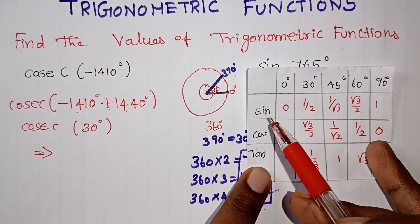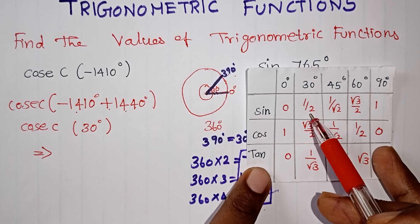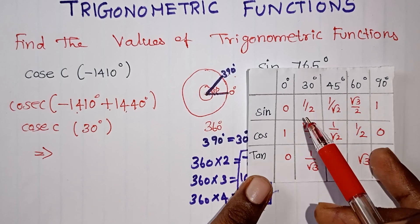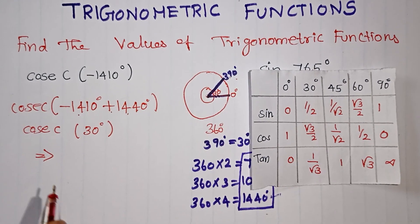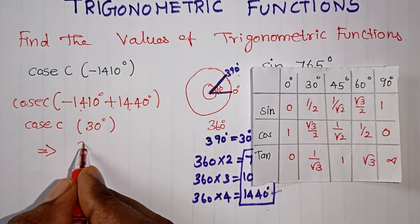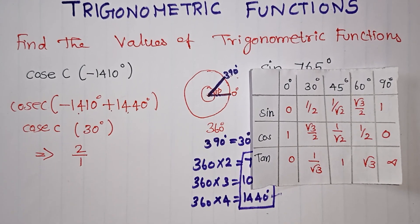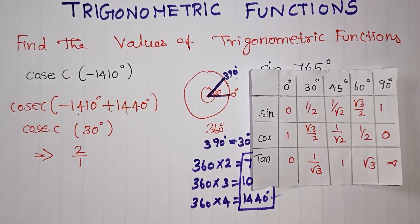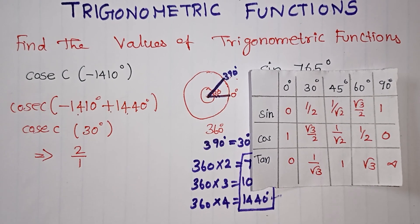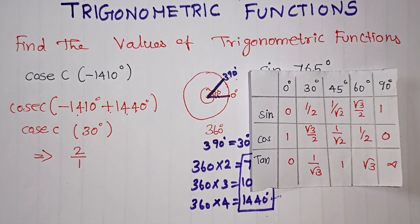If we have the angle of 30 degrees, then sine of 30 is one by two. So the cosecant — which is the reciprocal of sine — when we have the answer, we check that the questions are correct.